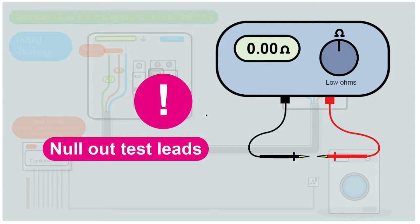It's important before we start doing any metered tests that we've nulled out our test leads. Nulling out is removing the resistance from the probes. If we put these probes together and press the test button we get a reading. We don't want that reading adding to any testing we're doing.